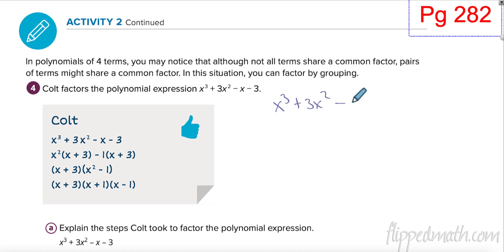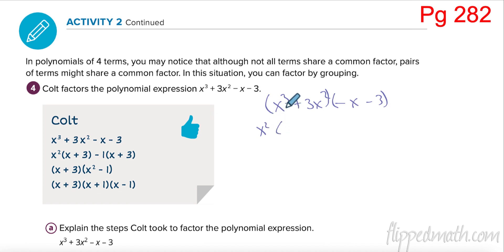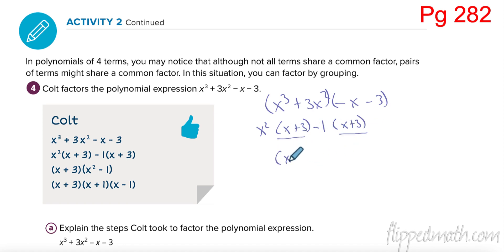On page 282 - anytime you have four terms you can try factor by grouping, though it doesn't always work. Group the first two and last two terms. In the first group I can take out x², leaving (x + 3). In the last group there's nothing obvious to factor out, but I take out negative one, which leaves (x + 3). Now I have (x + 3) as a common factor, so I factor that out and I'm left with (x² - 1).